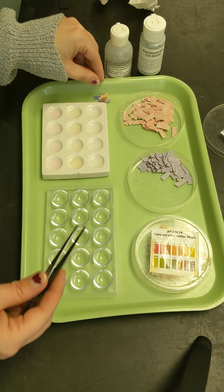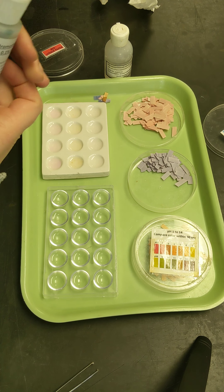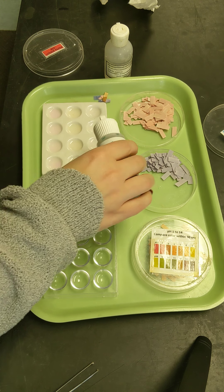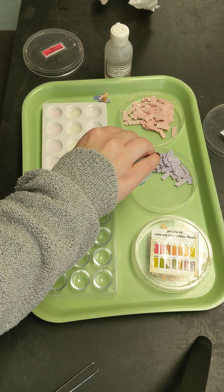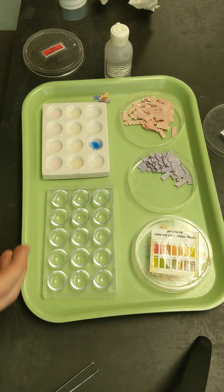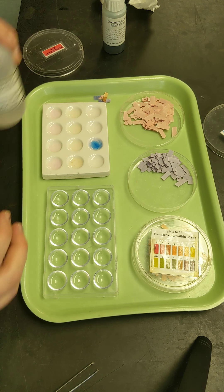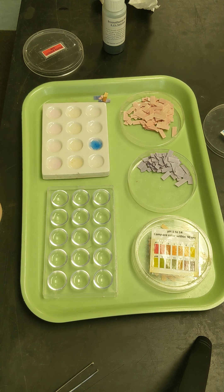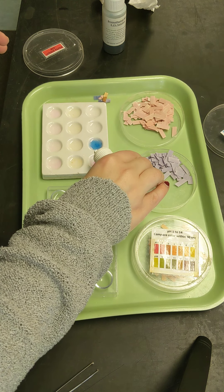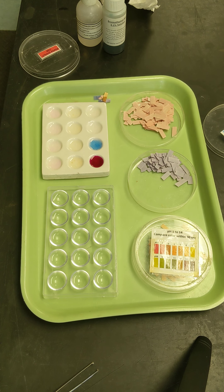You can also tell if something is a base if you use something like bromothymol blue. And if you add bromothymol blue in to a base, it won't change any color. If you add phenolphthalein into a base, it should turn a bright pink. So that is an example of one that would be a base.